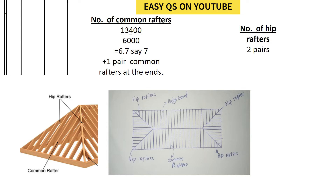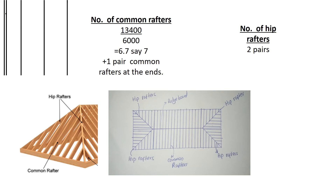At the hipped ends, we have common rafters. If you go to the ends of the house, there is a common rafter from where the ridge board reaches to the end of the house, and another common rafter on the other end from where the ridge board starts up to the end of the house. So we shall add a pair of common rafters at the ends to support the hipped roof.